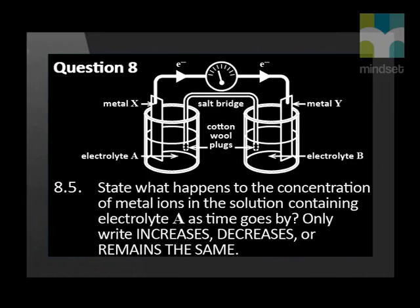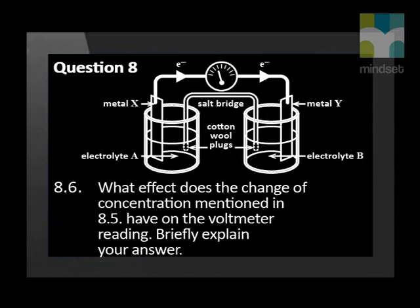State what happens to the concentration of metal ions in the solution containing electrolyte A as time goes by — only write increases, decreases, or remains the same. What effect does the change of concentration mentioned in the previous question have on the voltmeter reading?